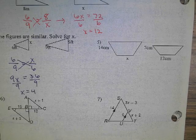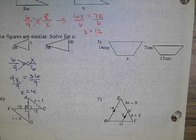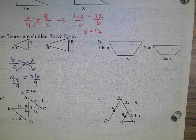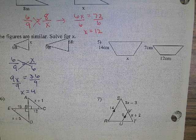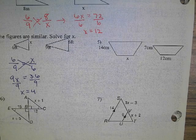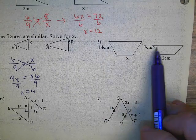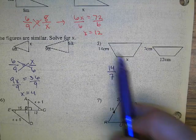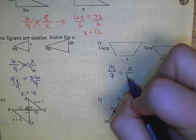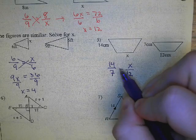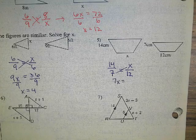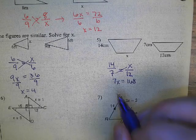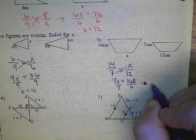Now I'd like you to try number 5 on your own. Hopefully you took the opportunity to try it. We're just going to set up our proportion and solve. So I have that these two sides are corresponding. So 14 is to 7 as, I went 14 to 7 so now I'll do X to 12. So I'll have 7X is equal to 14 times 12 which is 168. Then we'll divide both sides by 7, and we'll get that X is equal to 24.